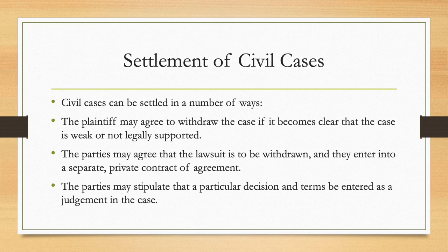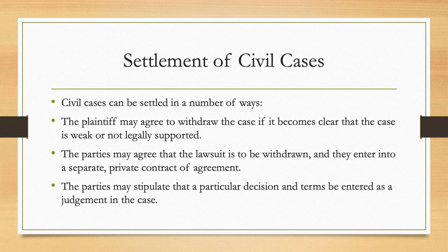Civil cases can be settled in any number of ways. The plaintiff may agree to withdraw the case if it's become clear that the case is weak or not legally supported. The parties may agree that a lawsuit is to be withdrawn and they enter into a separate, private contract of agreement. Or the parties may stipulate — that is, ask the judge to enter a particular decision and terms as the judgment in the case.